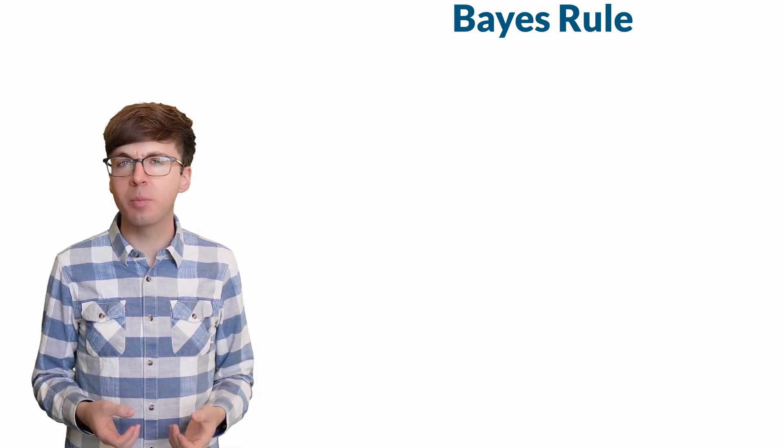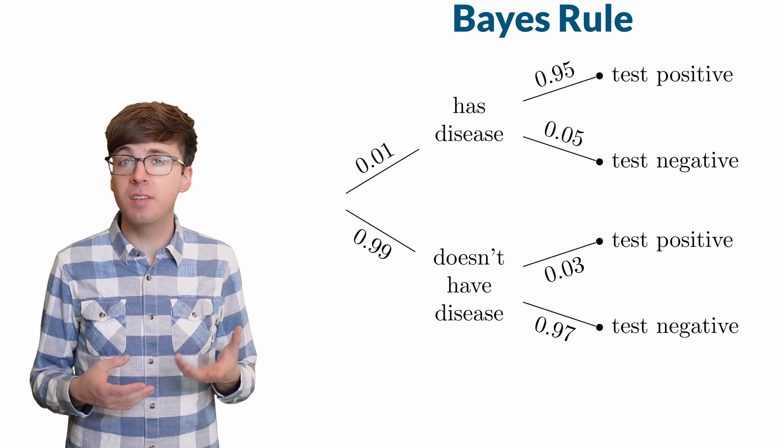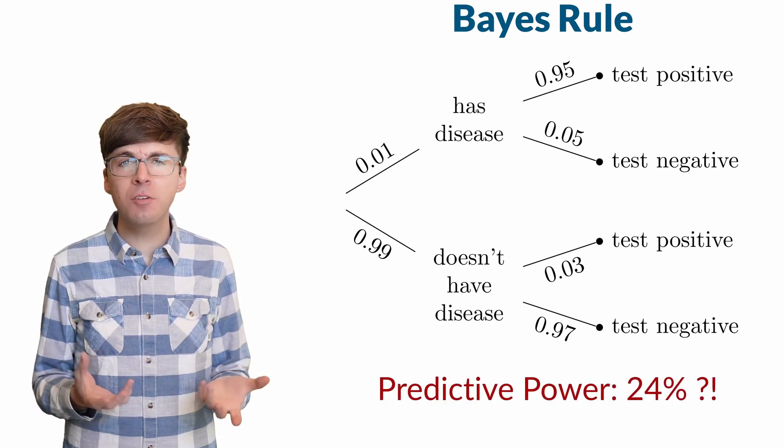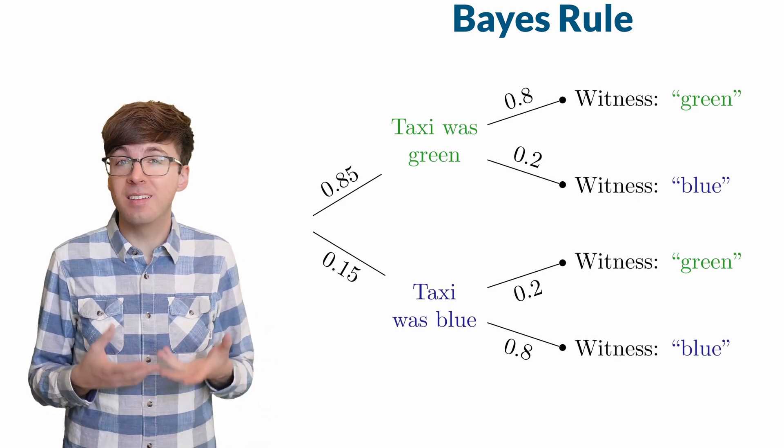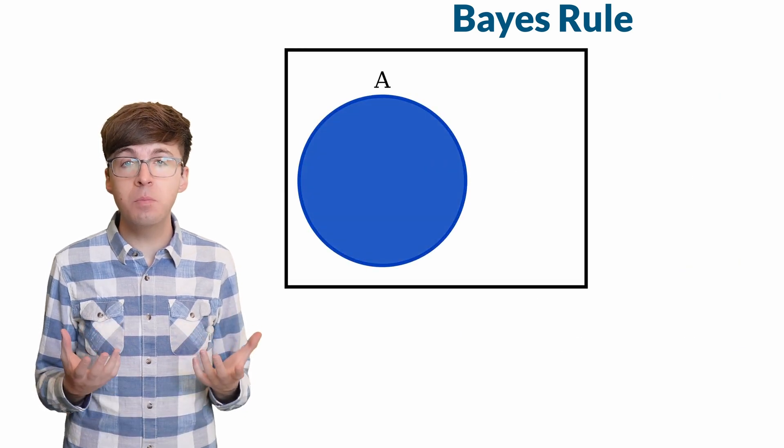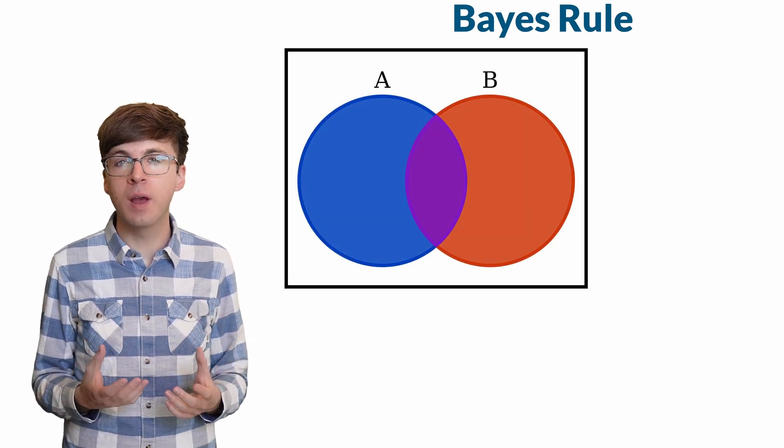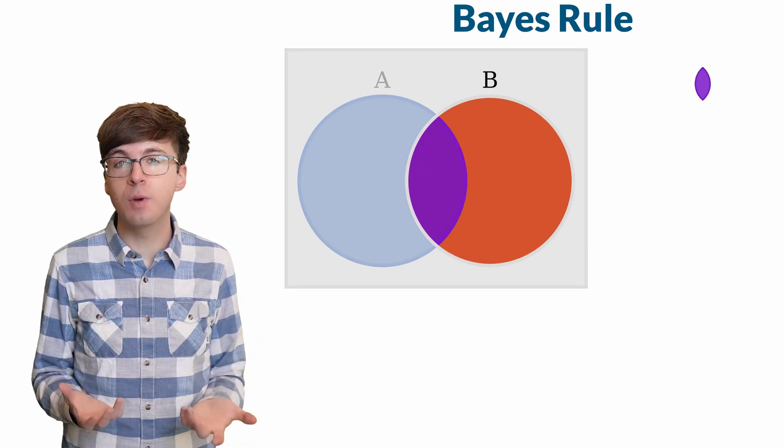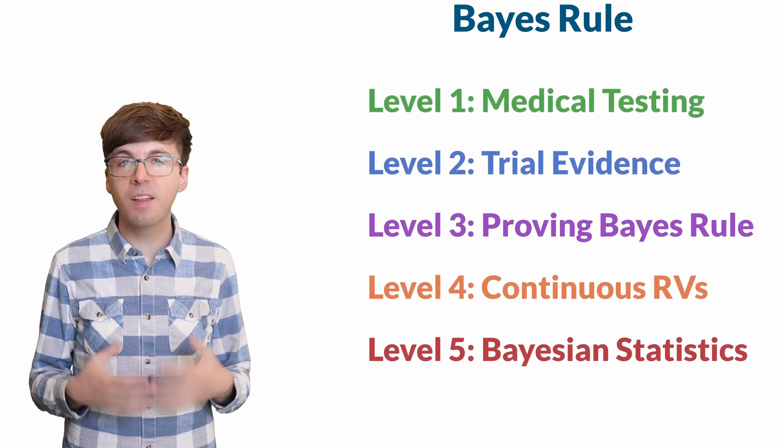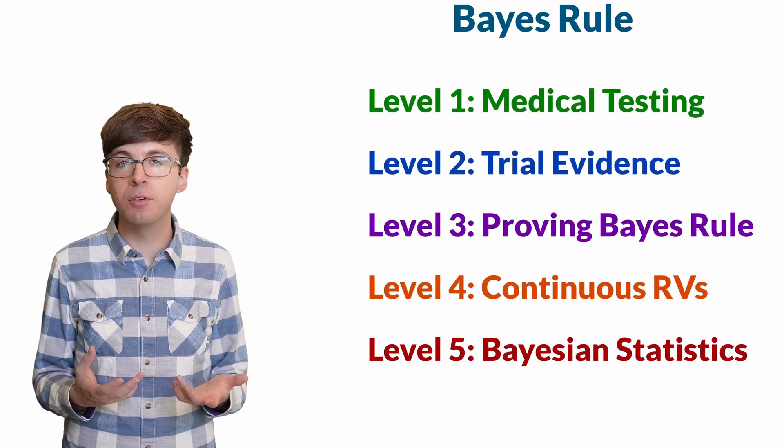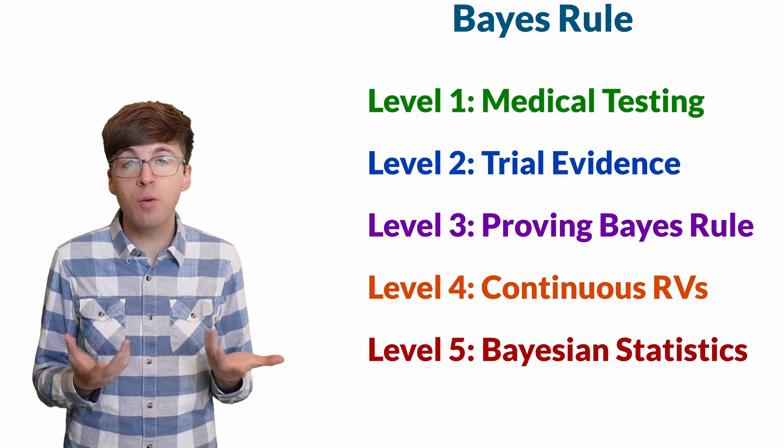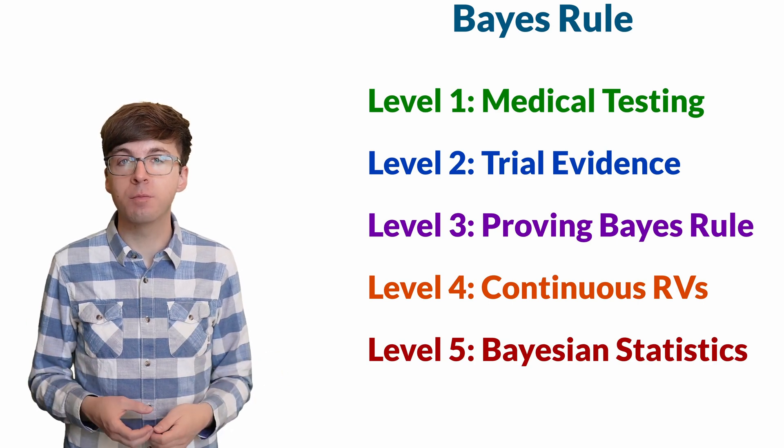Probabilities can easily trip us up. A diagnostic test that seemed extremely accurate can have very low predictive power, and misunderstanding probabilities in trial testimony has led to innocent people being convicted of terrible crimes. Bayes' rule is a simple but incredibly powerful way for us to update probabilities based on new evidence and fix our often very wrong intuition. Let's explore Bayes' rule in five levels, ranging from medical testing and trial testimony to the entire branch of statistics built from the power of Bayes' rule.